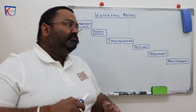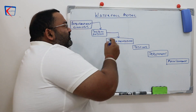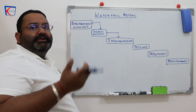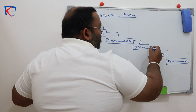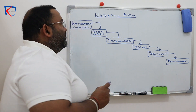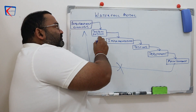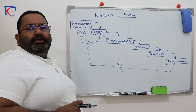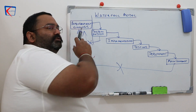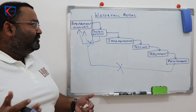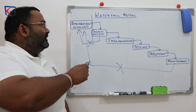Why is this model called the waterfall model? Because just as water falls from top to bottom, we move from one stage to another — from requirement to design, design to implementation, implementation to testing, and so on. Like a waterfall, we can only move from top to bottom; we cannot go back from bottom to top. Once a stage is over and requirements are frozen, you cannot go back to make changes.